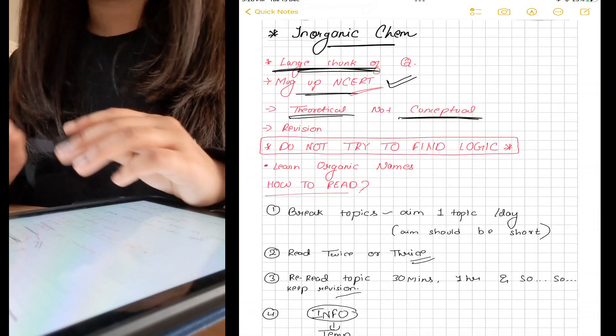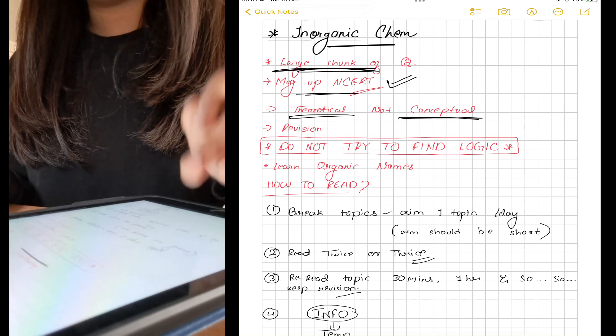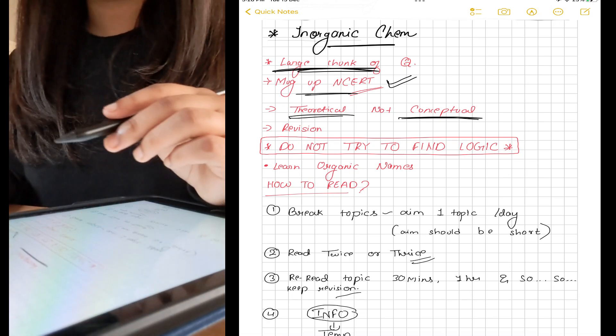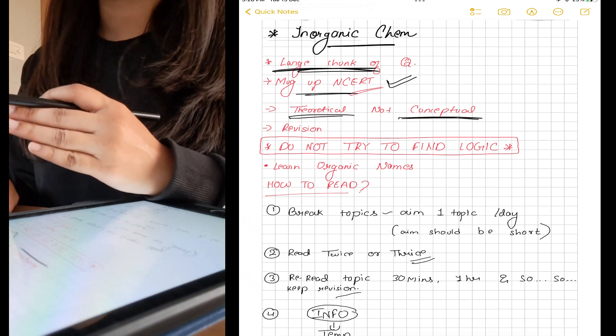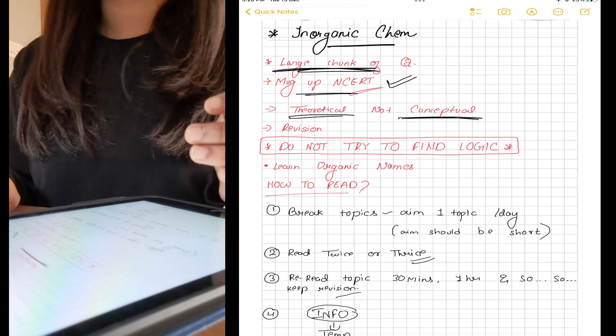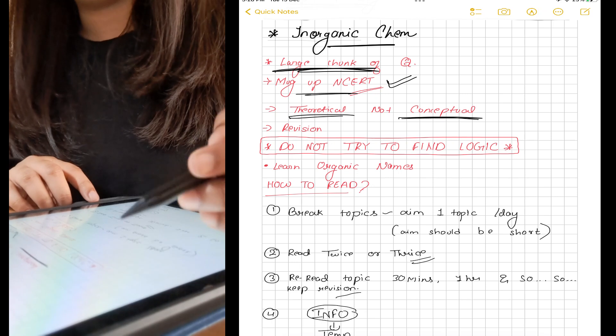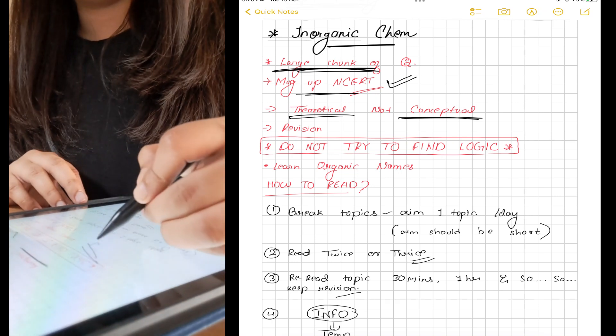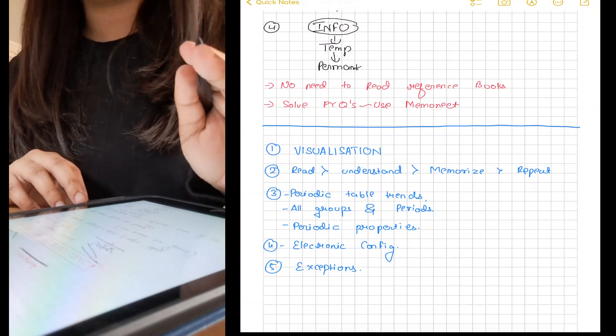How to read inorganic: First, break the topics and aim for one topic per day. The aim should be short. Read twice or thrice the entire content so you can memorize most things. Reread the topic after 30 minutes, then one hour, and so on. Keep revising so that your brain grasps it as important and shifts it from temporary to permanent memory.